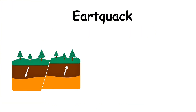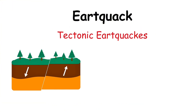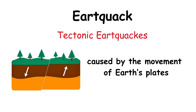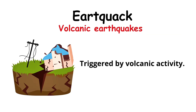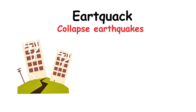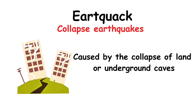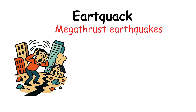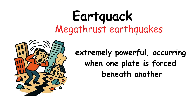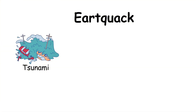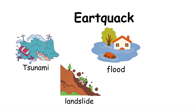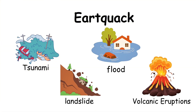Types of earthquakes include tectonic earthquakes caused by the movement of Earth's plates, volcanic earthquakes triggered by volcanic activity, collapse earthquakes caused by the collapse of land or underground caves, and megathrust earthquakes — extremely powerful, occurring when one plate is forced beneath another. Earthquakes can also trigger other disasters, such as tsunamis, landslides, floods, and even volcanic eruptions.